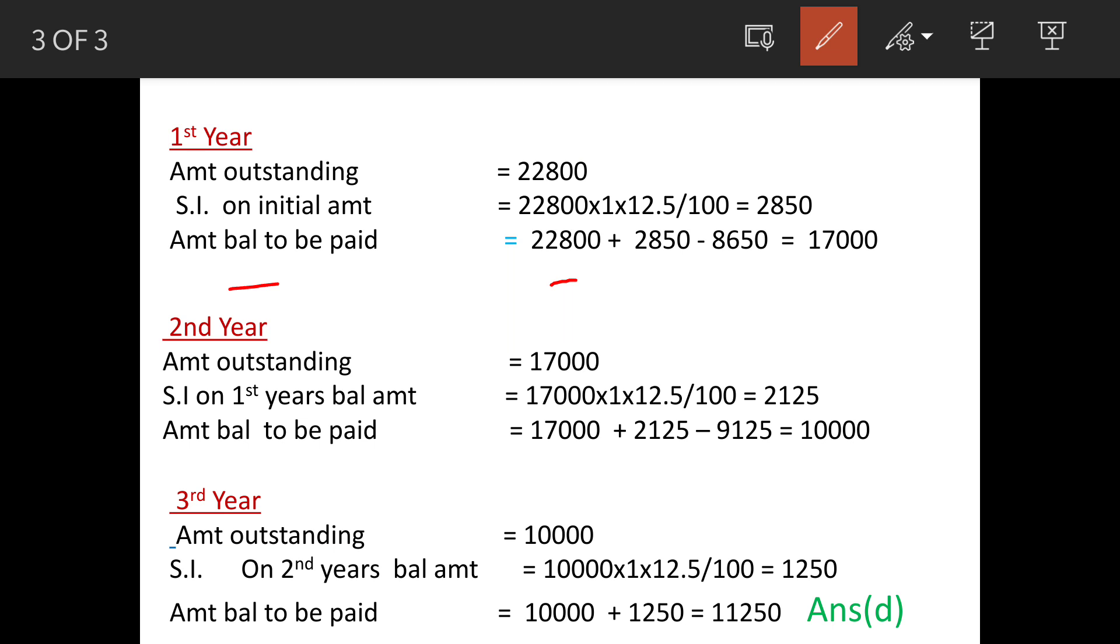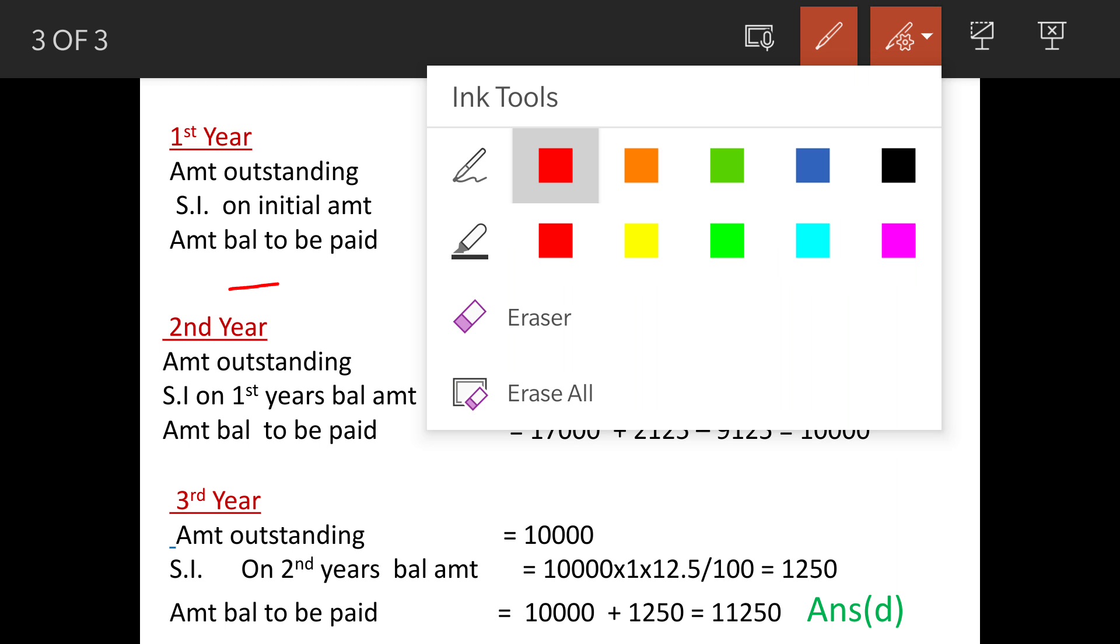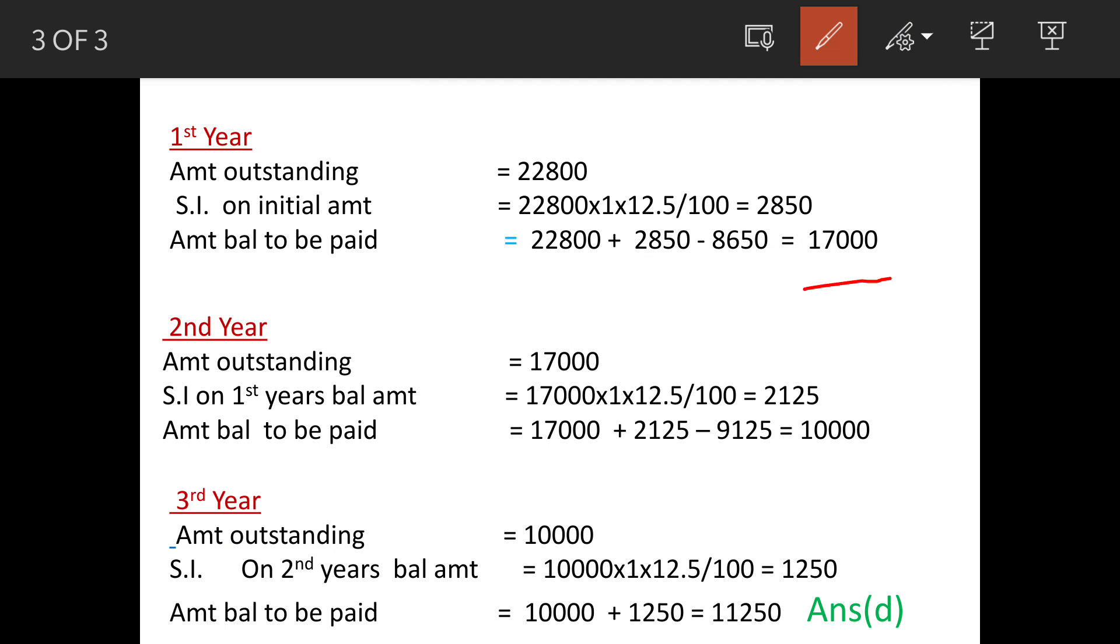22,800 plus interest, that is 2,850, minus amount paid 8,650. So balance at the end of first year is 17,000 rupees. Now this 17,000 rupees is inclusive of interest at the rate of 12.5 percent.